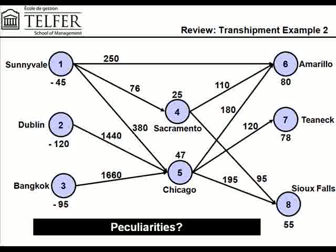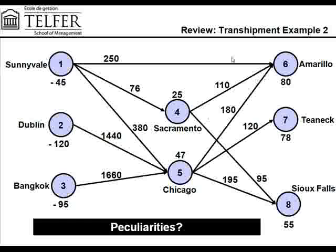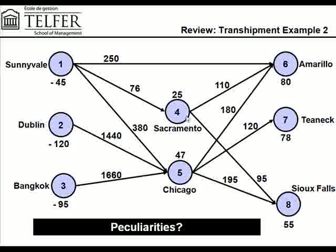Additionally, we're going to have a dummy node that will supply to one of the five demand nodes in our problem, which includes the final destination nodes as well as the transshipment point nodes. So with that in mind, let's go into Excel and see how to go about solving this problem.